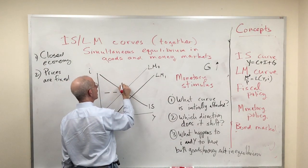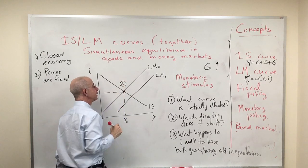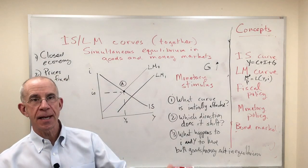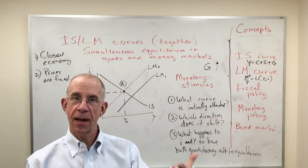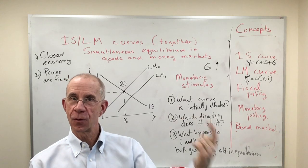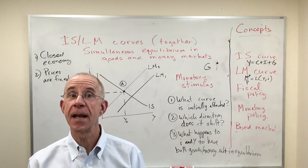So we started out at point A. So with more money in circulation, we've either got to have falling interest rates, or an increase in output, or some combination of the two.